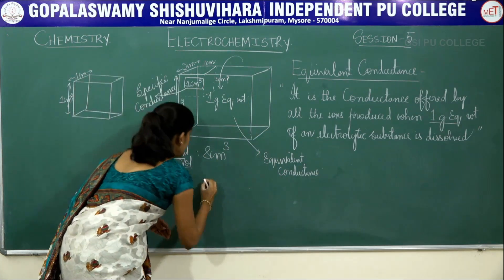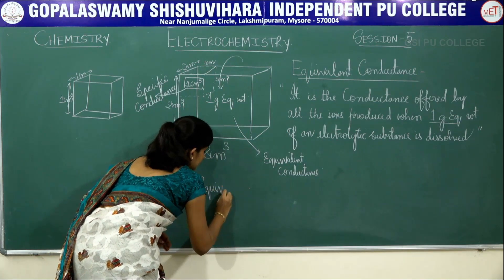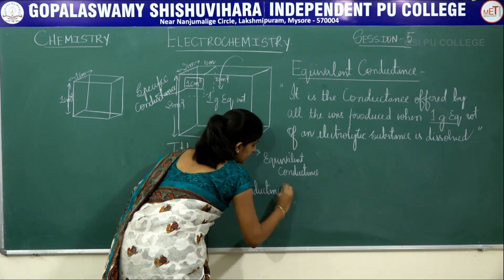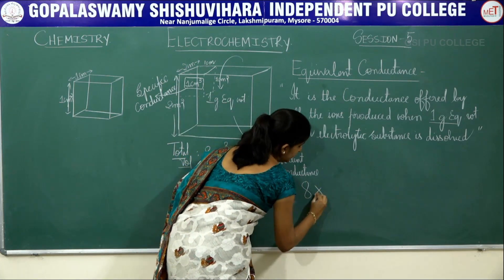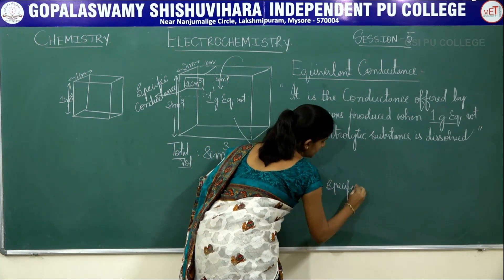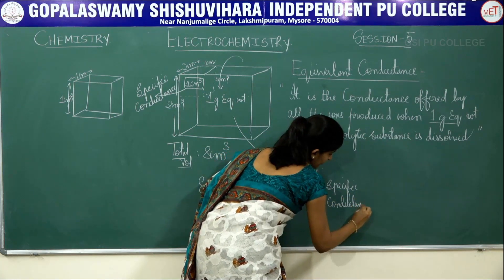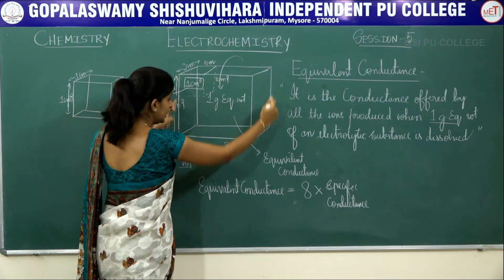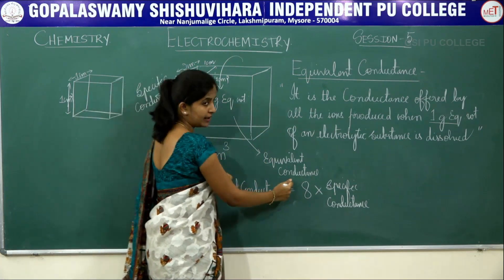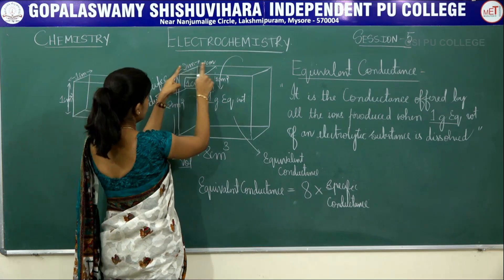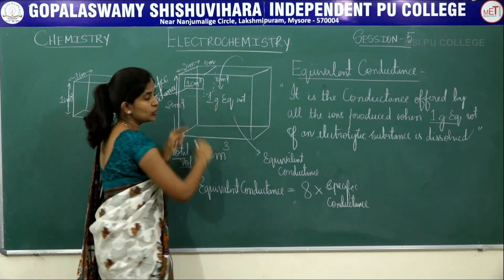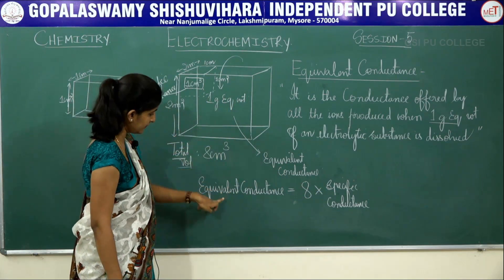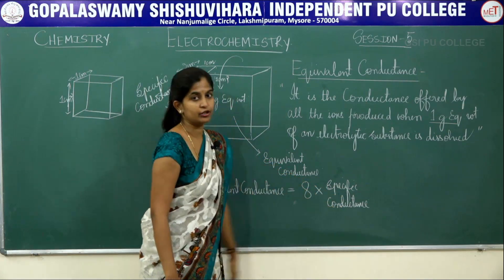So I can write it as: equivalent conductance is equal to 8 times that of your specific conductance. The conductance offered by ions present in the total volume (8 cm cube) when 1 gram equivalent weight is dissolved is called equivalent conductance, while conductance offered by ions in 1 cm cube is specific conductance. Hence, equivalent conductance equals 8 times specific conductance in this illustration.